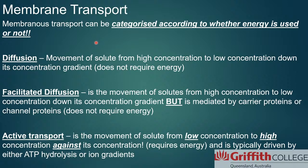Looking at the types of diffusion that do not use energy — these do not use ATP — the first one is regular passive diffusion. The definition for passive diffusion is the movement of a substance from high concentration to low concentration, down its chemical gradient or concentration gradient. It does not require energy. The next one that also doesn't require energy is facilitated diffusion — try not to get these two confused.